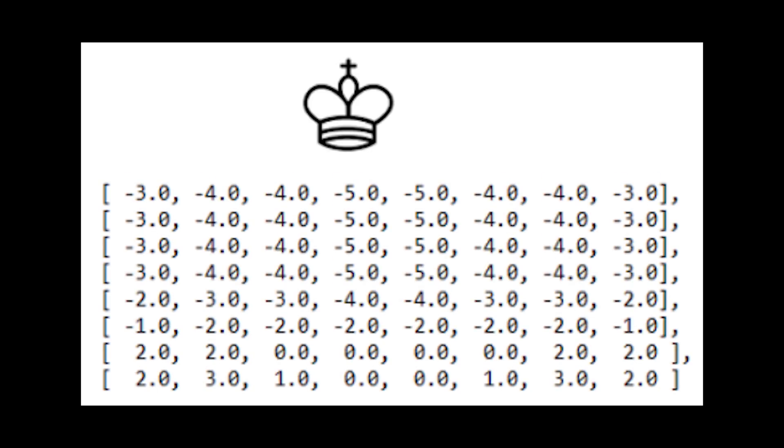And then finally, a king is best positioned when it's nicely protected, so that's when it is castled in the corner of your starting row.